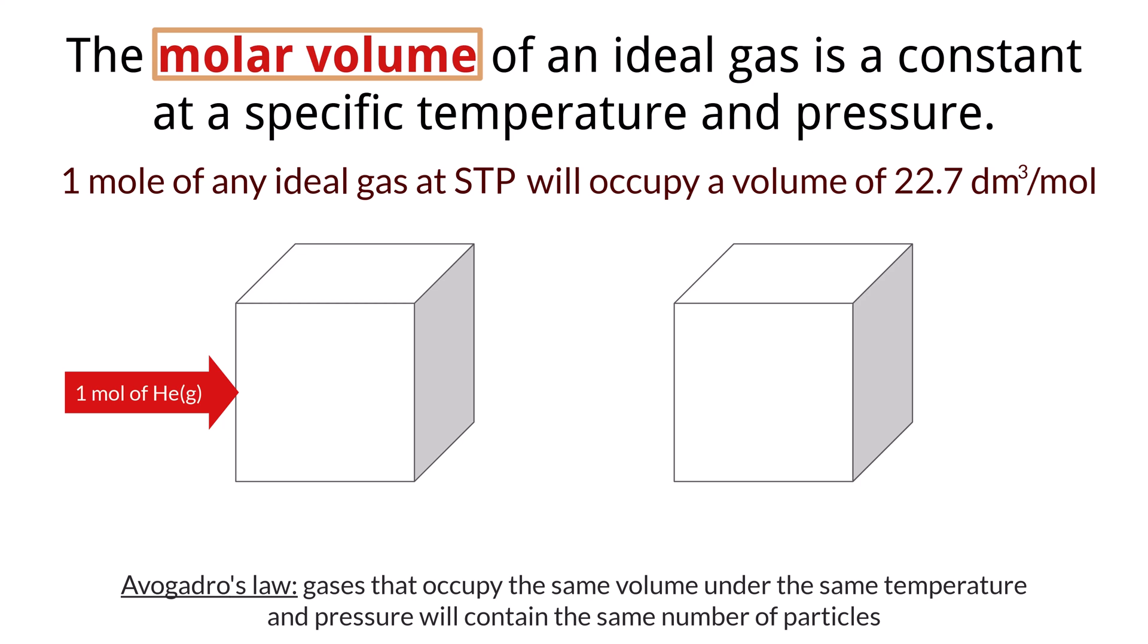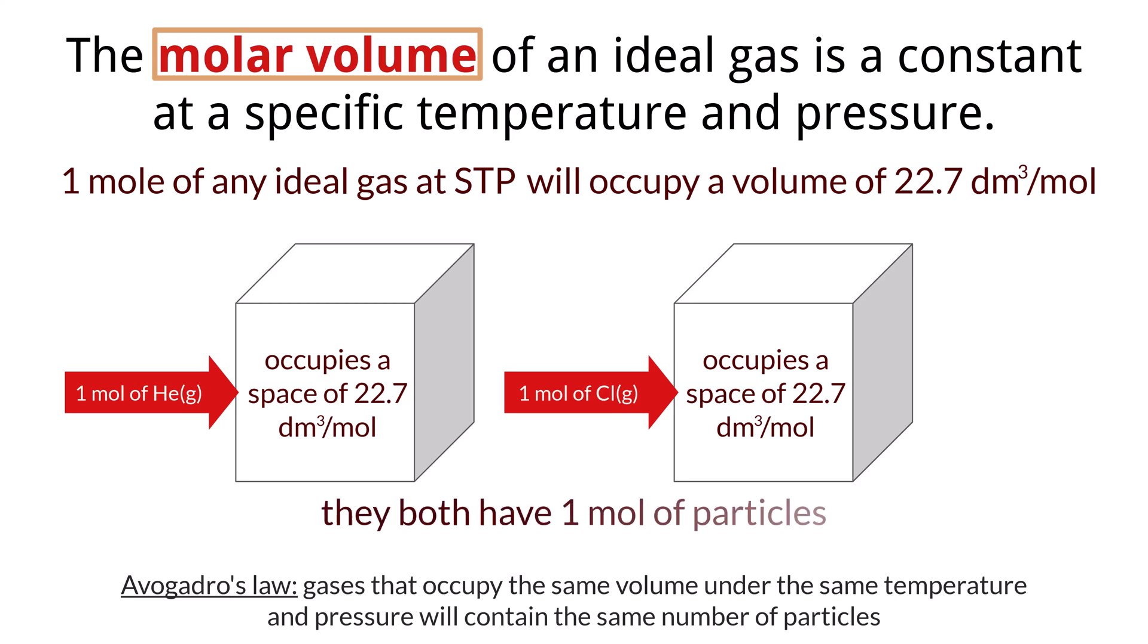So one mole of helium gas, compared to one mole of chlorine gas, both under ideal gas conditions at standard temperature and pressure, would occupy the same volume which would be a container at 22.7 cubic decimeters. So each would contain the same number of particles within the volume, which would be 6.02 times 10 to the 23rd particles. Though the masses would be different because the mass of each particle is different.